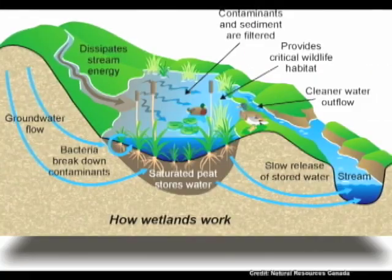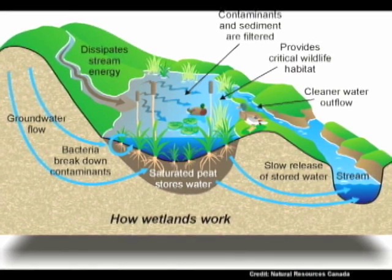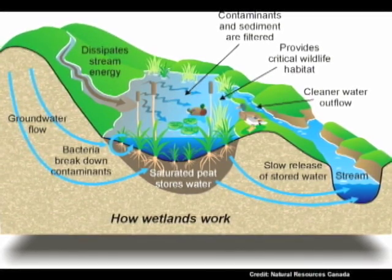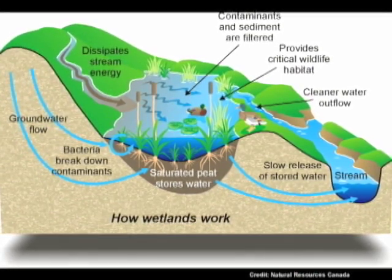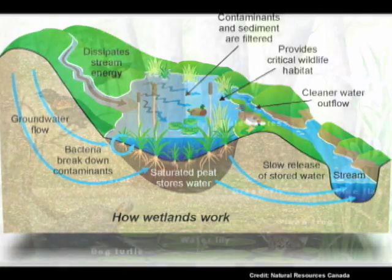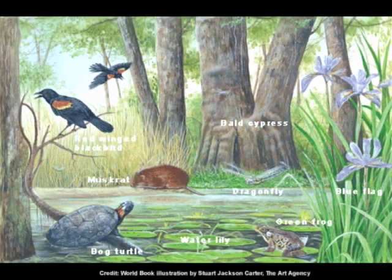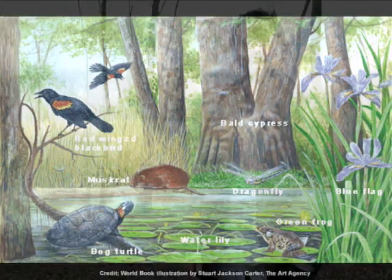Wetlands are an important ecosystem because they help filter water. Water that falls on land as rain returns to rivers and lakes with a lot of pollutants and sediments and other things in it. And the creatures and plants that live in a wetland help to filter those materials out, keeping our water clean.